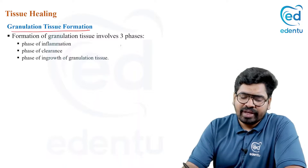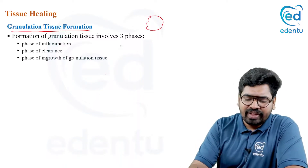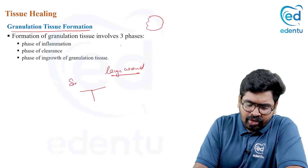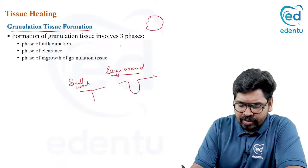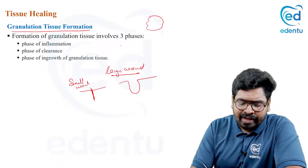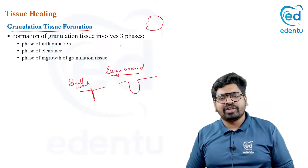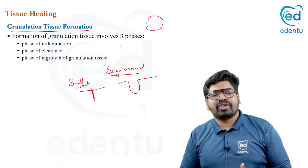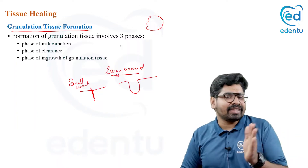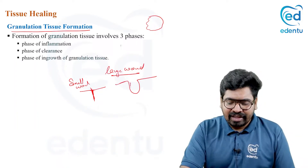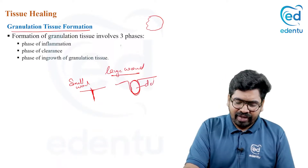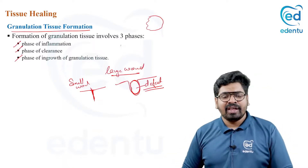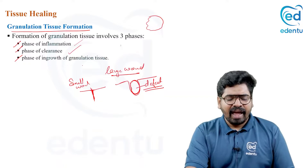Granulation tissue formation occurs when the wound is large. A small wound heals without granulation tissue — by primary intention — but a large wound requires granulation tissue to fill the defect. Granulation tissue formation occurs in three phases: the phase of inflammation, the phase of clearance, and the phase of formation or growth of granulation tissue.